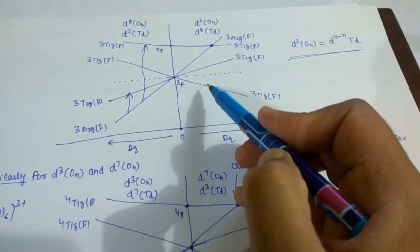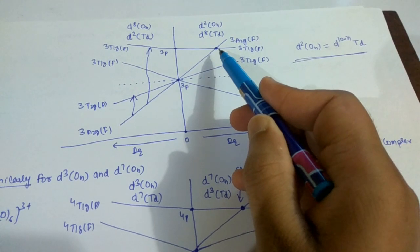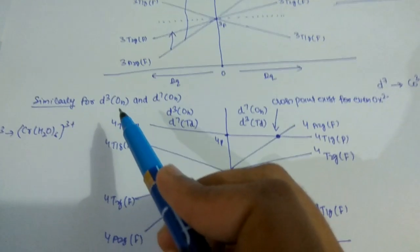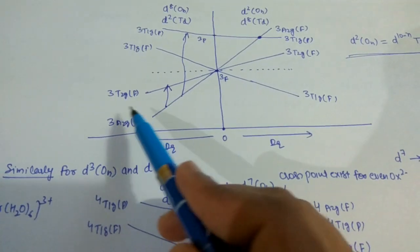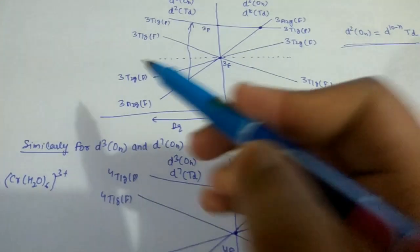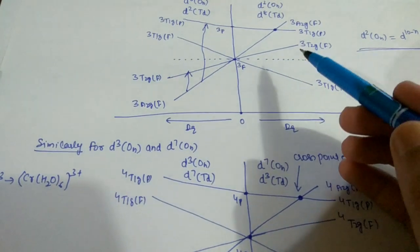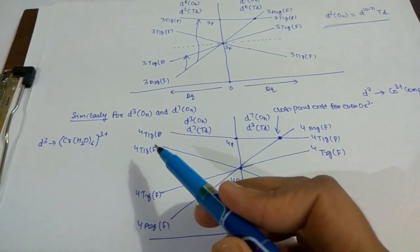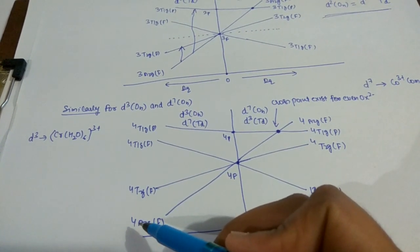The cross point corresponds to the two transitions — ³T₁g to ³T₂g and ³T₁g to ³A₂g(F) — having the same energy up to that level. Similarly, for d³ and d⁷ octahedral systems, the diagram remains the same except we replace all superscript 3 with 4, since transitions take place from ⁴F to ⁴P. So the terms become ⁴A₂g(F), ⁴T₂g(F), ⁴T₁g(F), and ⁴T₁g(P).